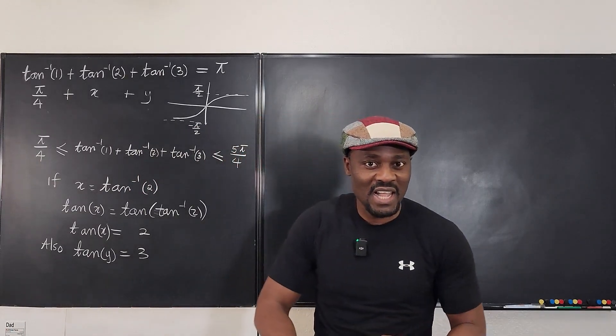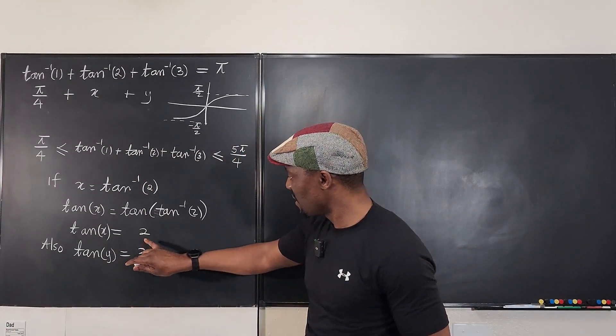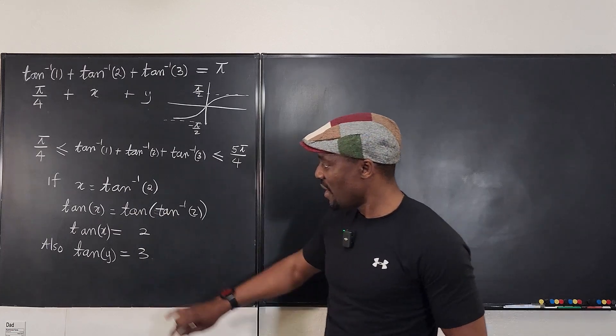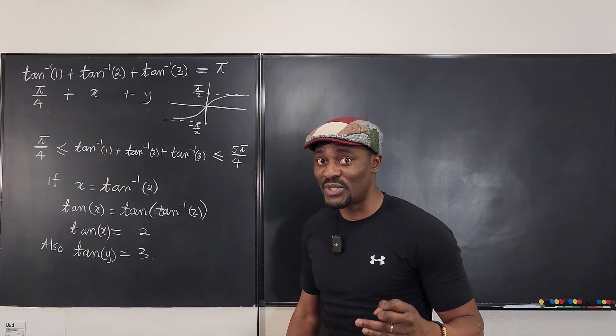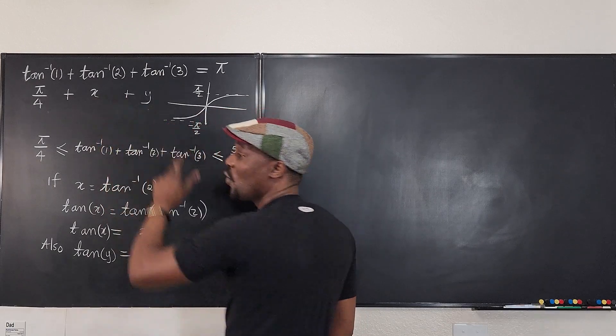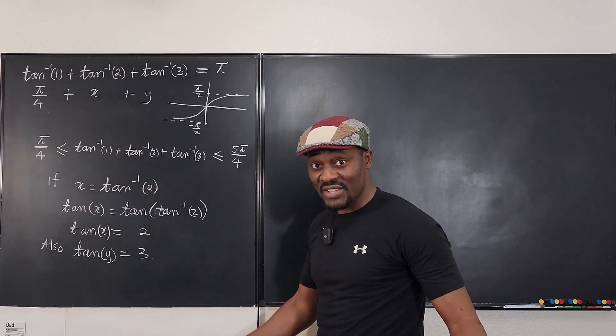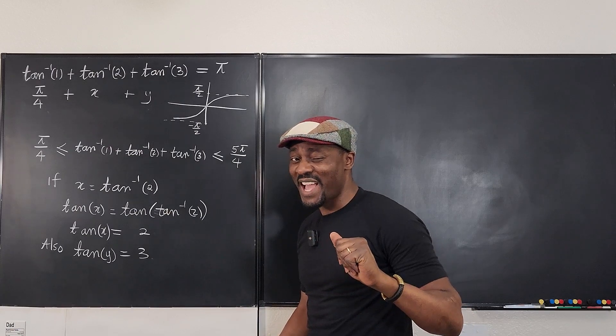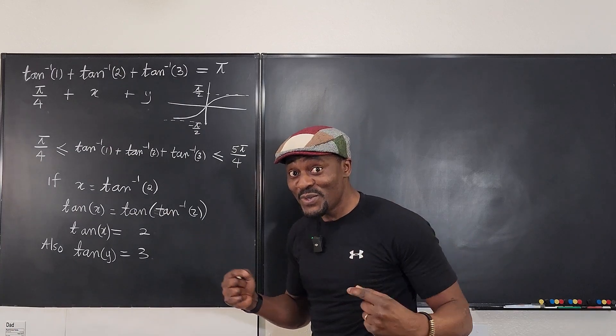Tan(x) is 2, tan(y) is 3, but I am not looking for tan(x) or tan(y). I want x plus y. I want these two together. Or if I can get them separately, that's going to be quite helpful. But I don't think I can get them separately, so I'm going to do them together.